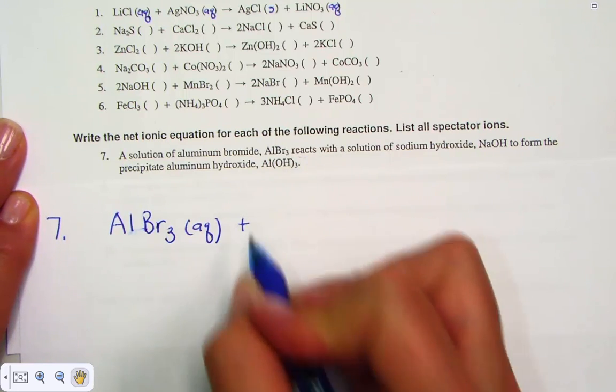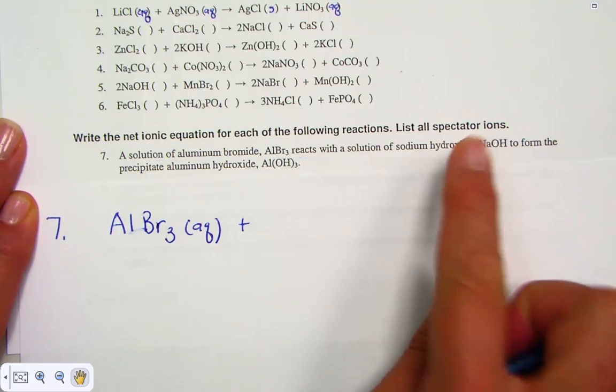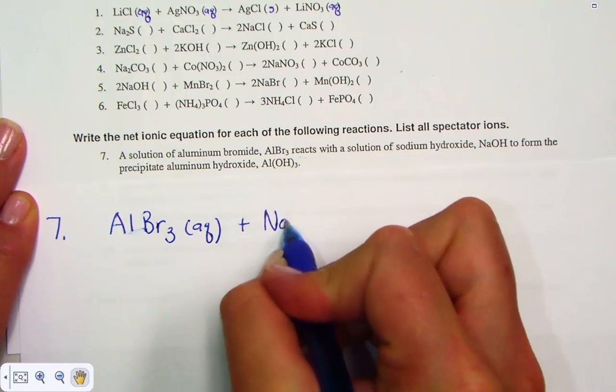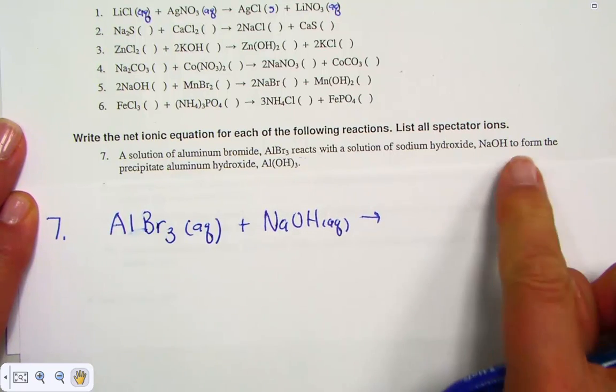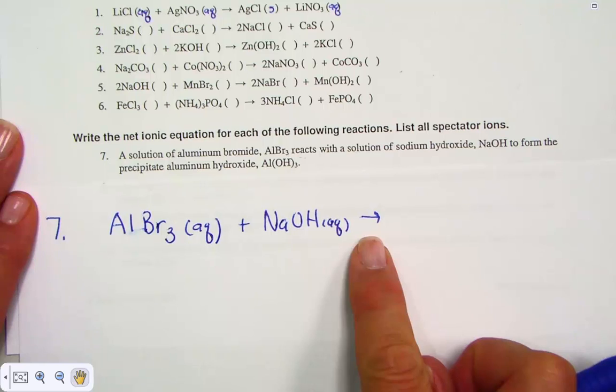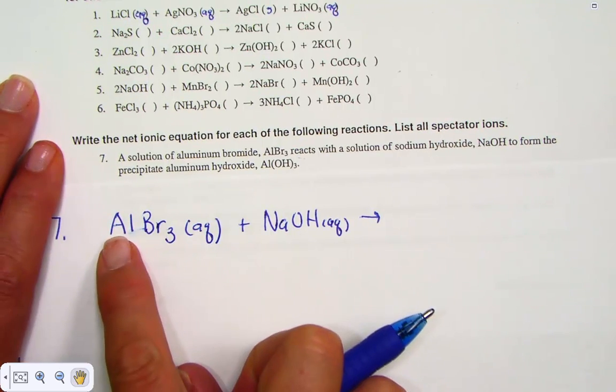Reacts with is a positive sign. A solution of sodium hydroxide, that's NaOH aqueous. To form is our arrow. And the precipitate, aluminum hydroxide—double displacement—aluminum goes to hydroxide.